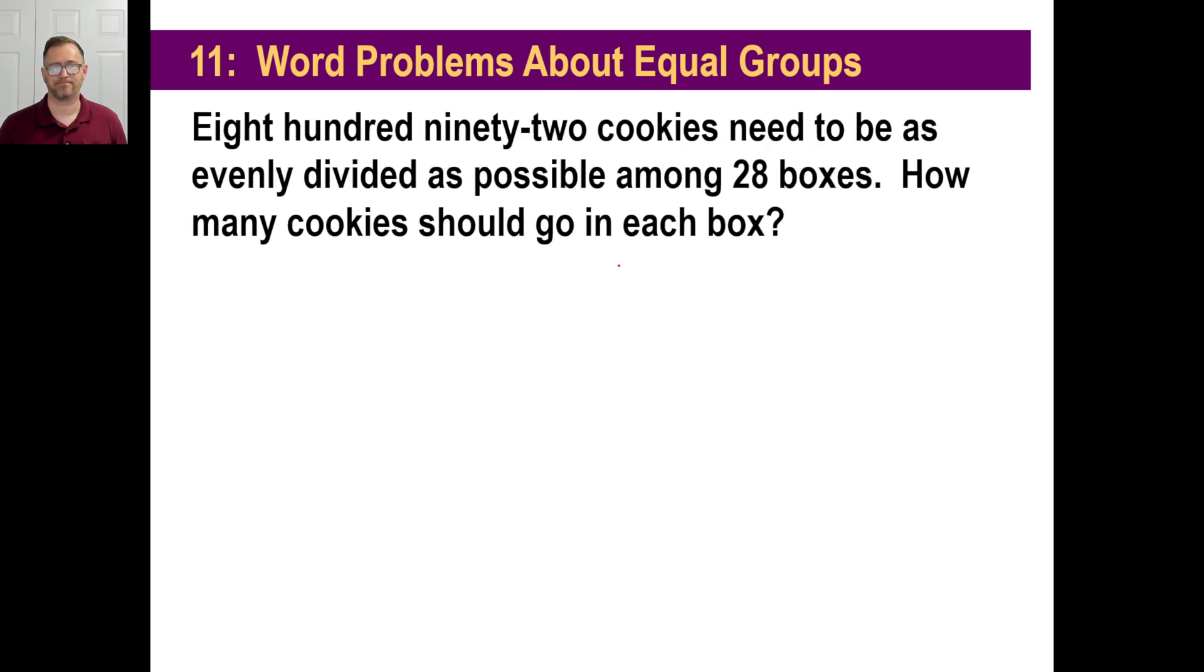Of course, the last bike can have 4 kids. Or he can even distribute the kids more evenly on the bicycles. And we'll do a problem like that in a second. So let's do it. 892 cookies need to be as evenly divided as possible among 28 boxes. How many cookies should go in each box? Now, this isn't, remember, this isn't just random. We need to divide these as evenly as possible.